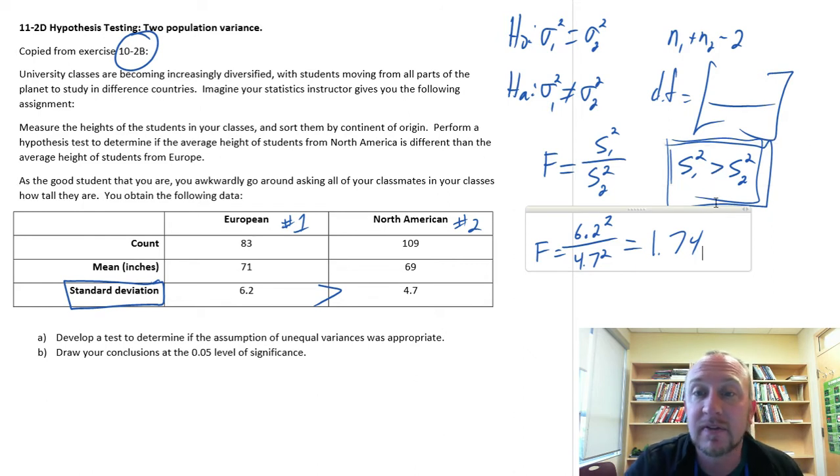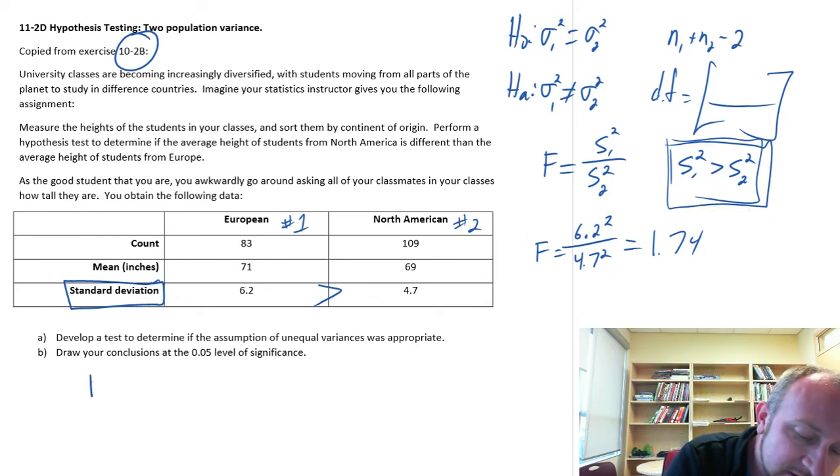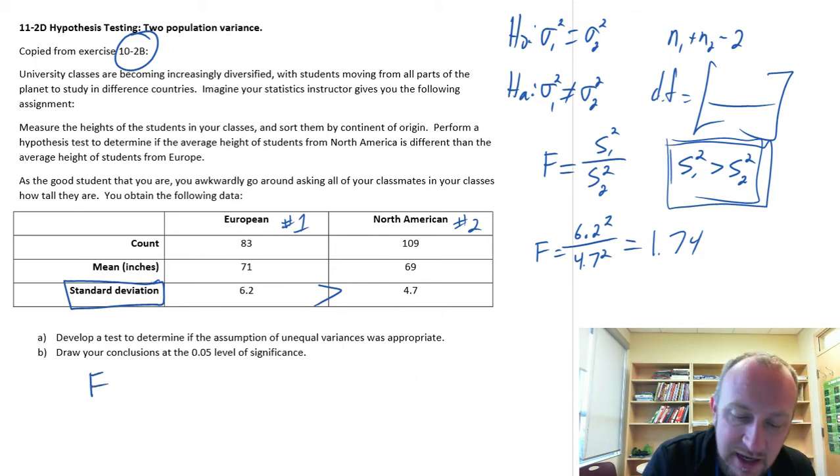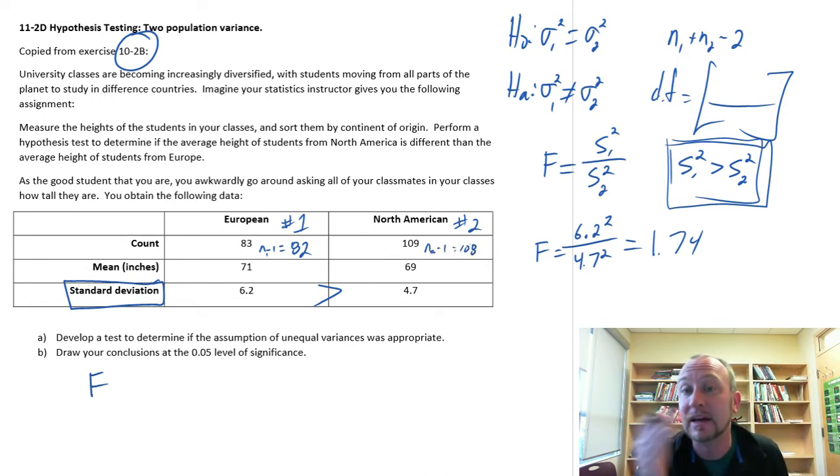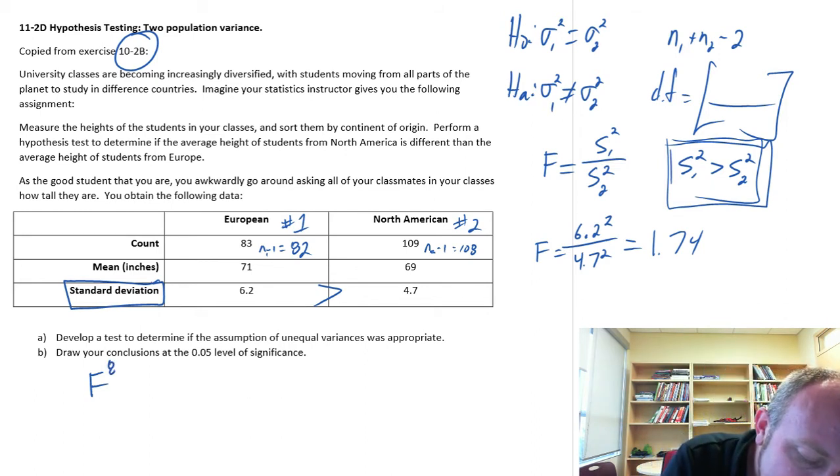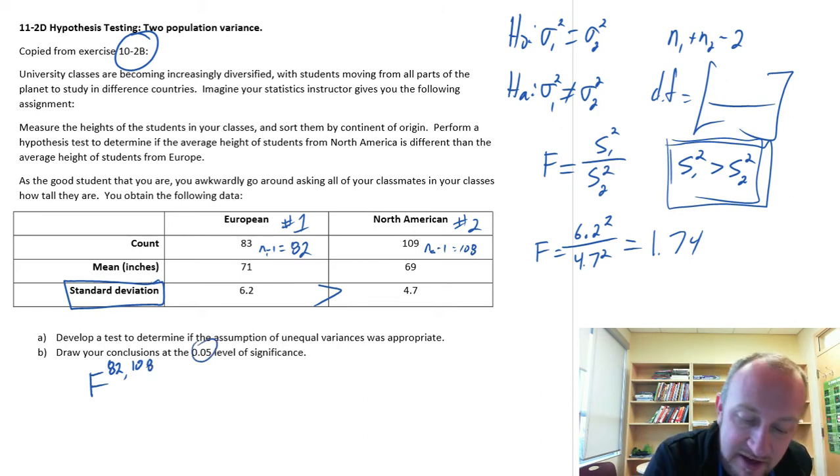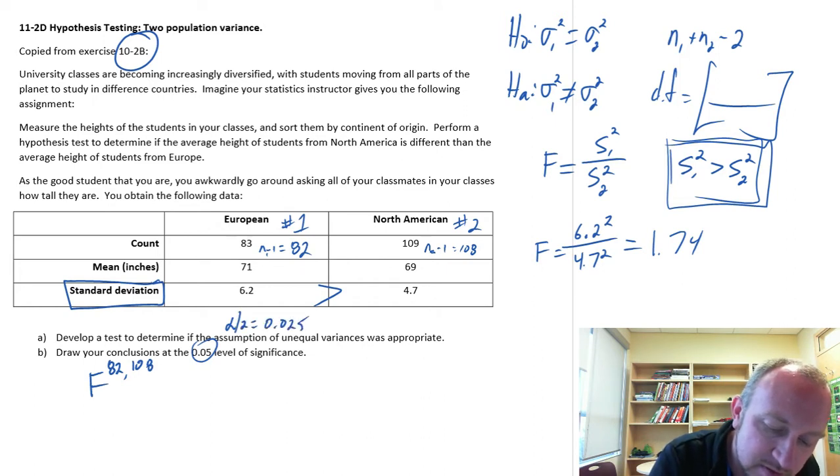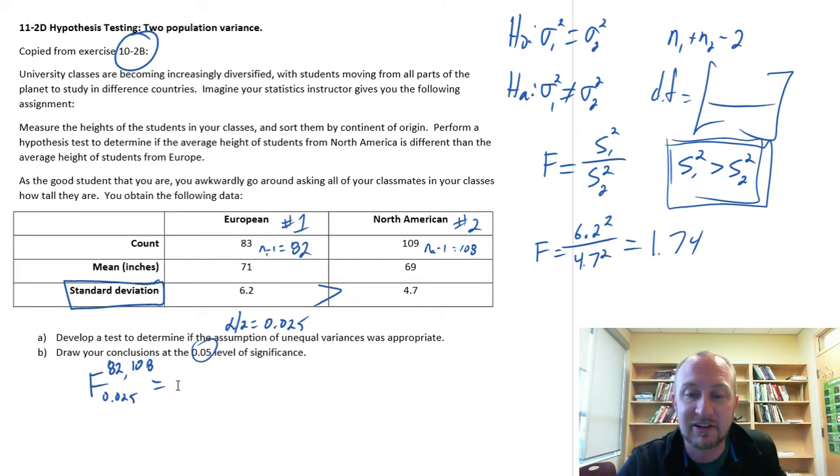Now let's find our critical value. We have 82 degrees of freedom in the numerator, n1 minus 1, and n2 minus 1 gives us 108 degrees of freedom in the denominator. I'll write this as 82 and 108. We'll perform this test at the 0.05 level of significance, so alpha divided by 2 is 0.025. Now let's go find this critical value.